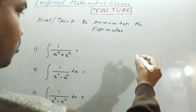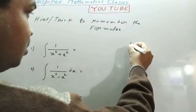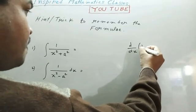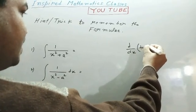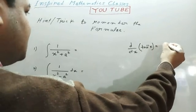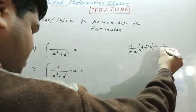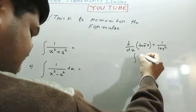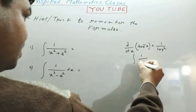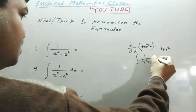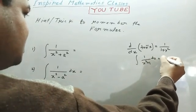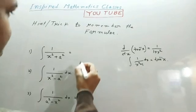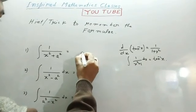We know derivative of tan inverse x is 1 upon 1 plus x square. So from this, 1 upon x square plus 1 takes tan inverse x. So here must be tan inverse x. Here means 1, here upon 1 and this is 1 by 1. So here x upon a, for a, 1 by a.